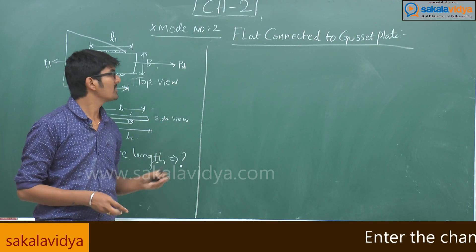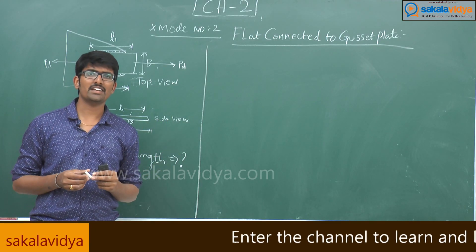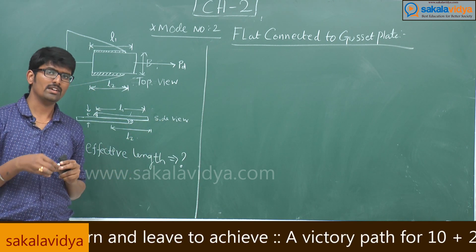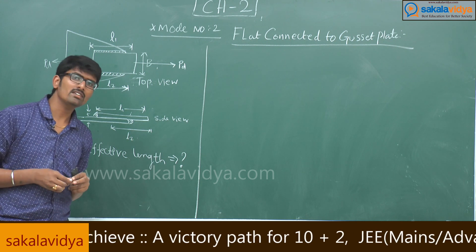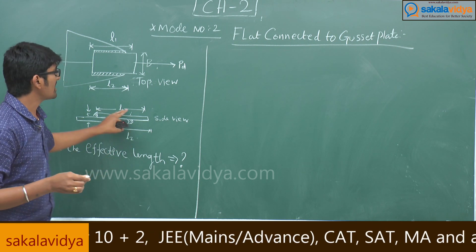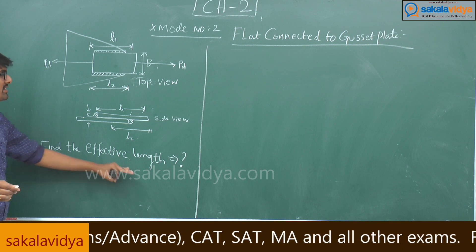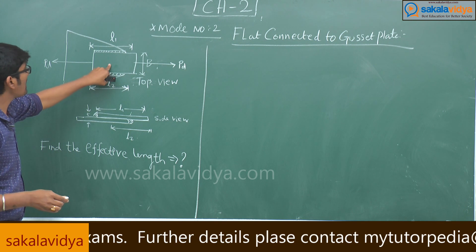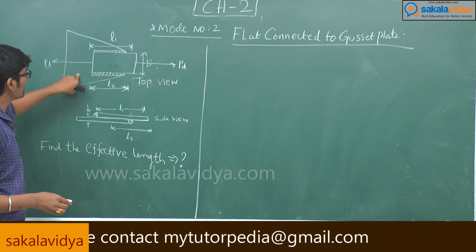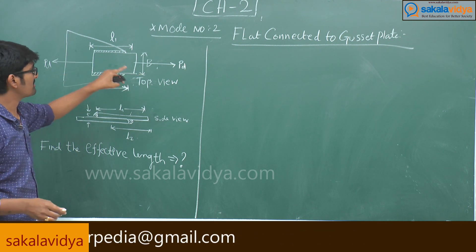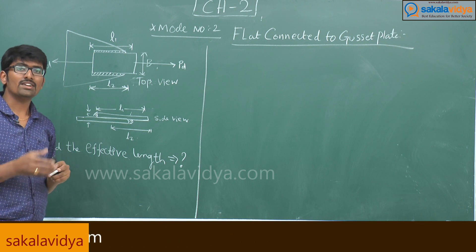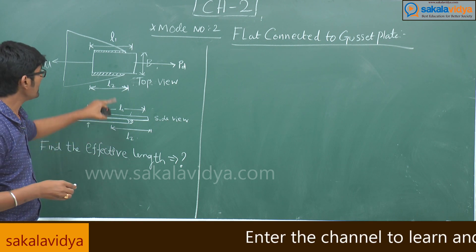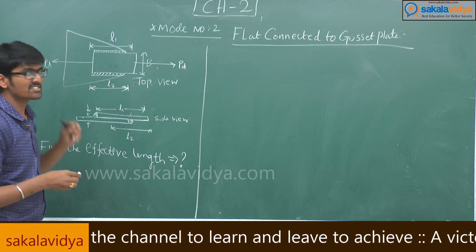Model number 2: a flat plate is connected to a gusset plate. This problem is different from our previous problem. In that model we found the design strength, but in this case we need to find the effective length when a flat plate is connected to a gusset plate. We know the design strength, but we do not know what the effective length is here — at what length we need to weld the flat to the plate. We are given the width and thickness of the plate.